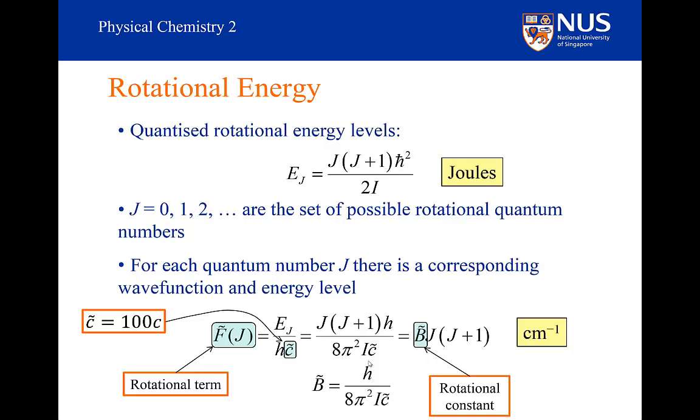So it is a derived constant, but it is interesting because it depends on the moment of inertia which depends on the reduced mass and the bond length. So if I am able to determine what the rotational constant is, I am going to be able to say what the structure of my diatomic is, that is, what is its bond length.